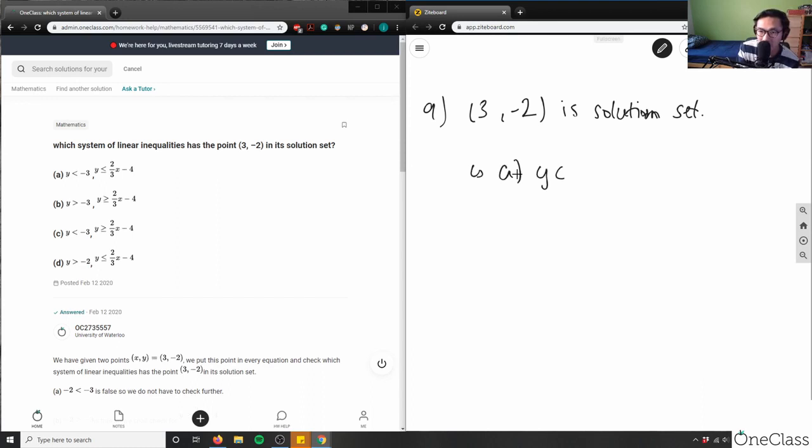Option A states that Y is less than -3, and Y has to be less than 2/3 X minus 4. Let's see. In this case, Y is -2, right? Remember, this is X, this is Y. Okay, so let's do this. I'm going to say this is A. So let's verify that Y belongs here. Let's sub in our numbers.